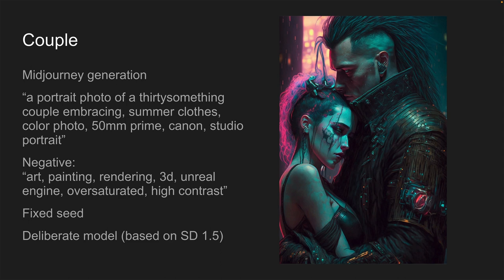We're going to take two images through each of the ControlNet models. The first one is the Japanese living room. The second one is this cyberpunk couple that are embracing. Again, we're going to choose a prompt that tries to change this image as much as possible. We've got a portrait photo of a 30-something couple, summer clothes, colour photo, 50mm prime, Canon, studio portrait — so we're going to try and move from a painting to a photo — and we're going to use negative prompts to prevent any arty painting-type outputs. Again, we're using the fixed seed for all generations and the deliberate model.